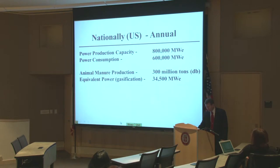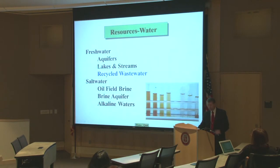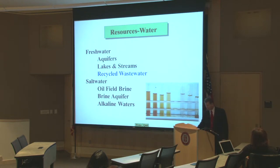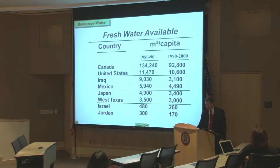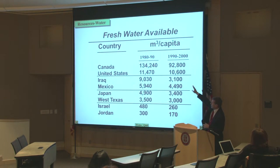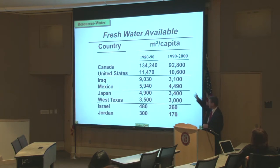I want to divert your attention just a little bit to looking at water — think about how much water we have available for human consumption on this earth, by country. It seems divergent, but they're directly connected. This represents cubic meters per person of fresh water available for consumption. Notice what happens from the 1980–90 time frame to the 1990–2000 time frame — they've dropped considerably, almost an order of magnitude difference between countries like Canada, the U.S., and so forth.